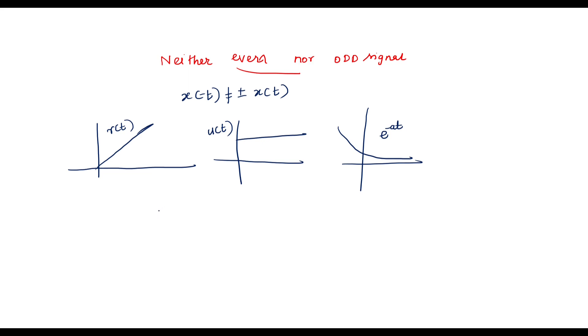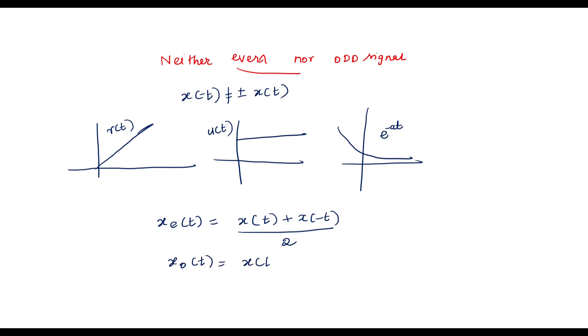For a neither even nor odd signal, how to find out the even and odd components? For the even component: x_e of t is equal to x of t plus x of minus t, divided by 2. For the odd component: x_o of t is equal to x of t minus x of minus t, divided by 2. This is the way to find out even and odd components.